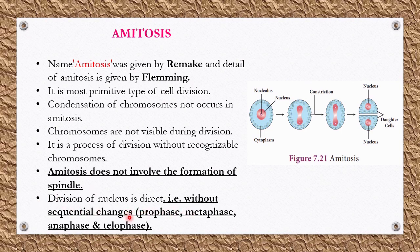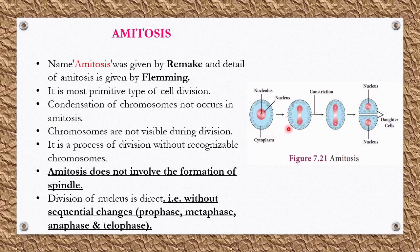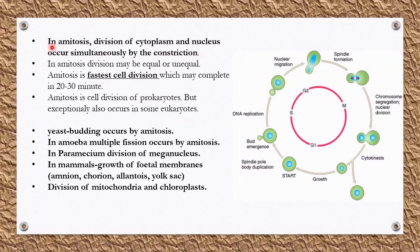In amitosis, division of the nucleus is direct — without sequential changes like prophase, metaphase, anaphase, or telophase. Karyokinesis and cytokinesis both run together simultaneously, because there are no sequential stages. The nucleus and cytoplasm both divide together, and finally two daughter cells are observed. This direct simultaneous division is called amitosis.